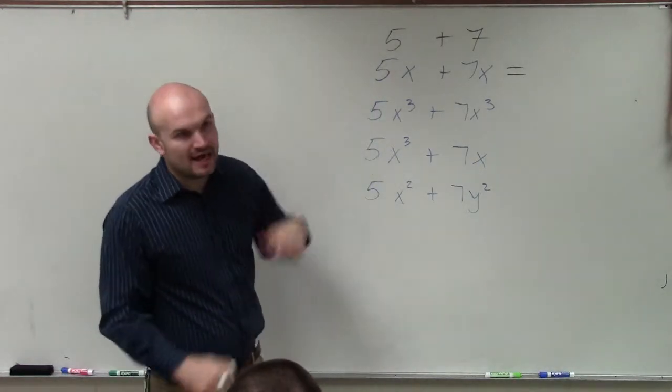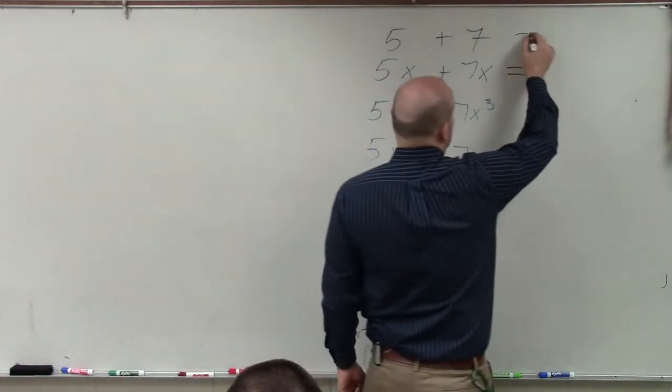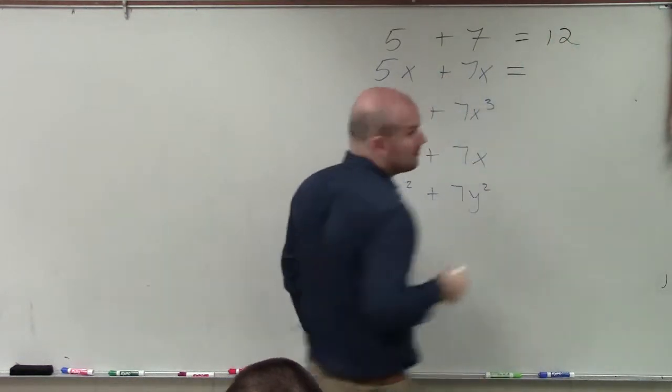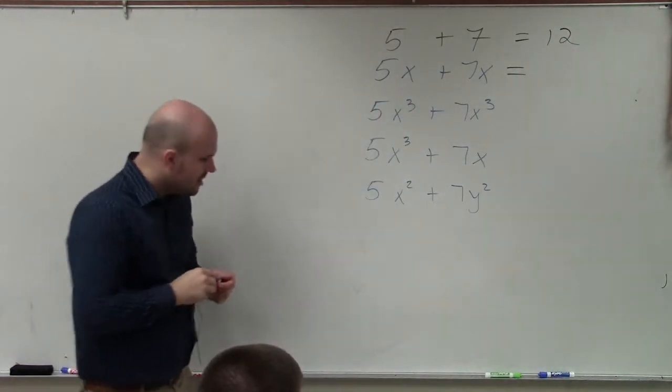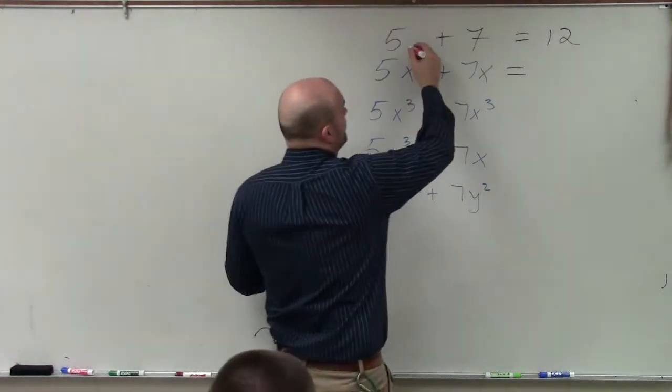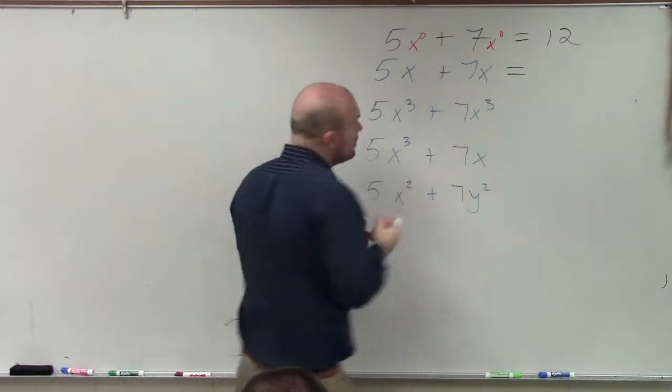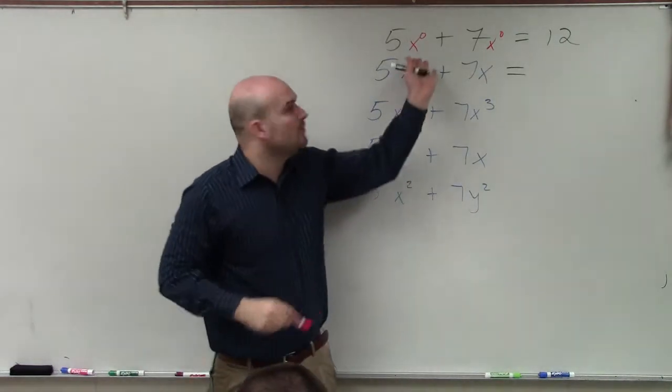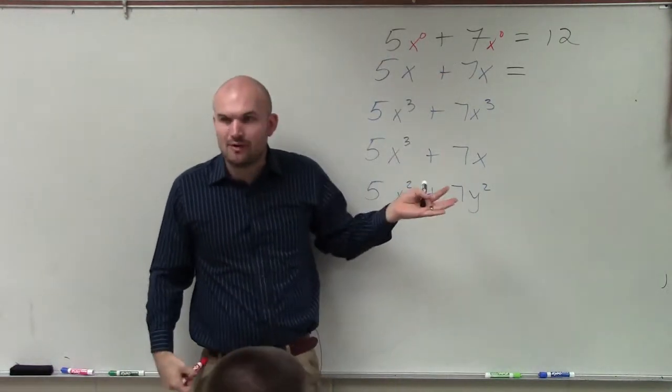So obviously, you guys know how to add 5 plus 7, right? 5 plus 7, that answer is going to be 12. You guys are pretty familiar with this. But one thing I want you guys to understand is do those actually have the same variable factors? Well, what we talked about last class period is remember, if you don't see a variable, you can always put a variable raised to the zero power, right?